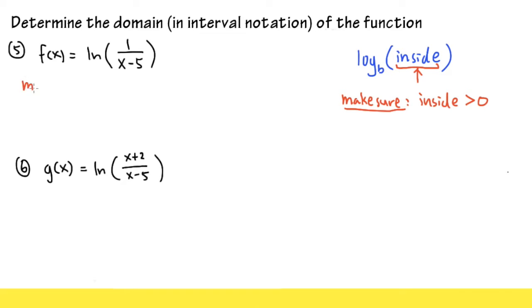Let me make sure, let me write it down here. Whenever we have a log function, in this case the natural log function, we have to make sure that inside, which is this, 1 over x minus 5, this fraction has to be greater than 0.